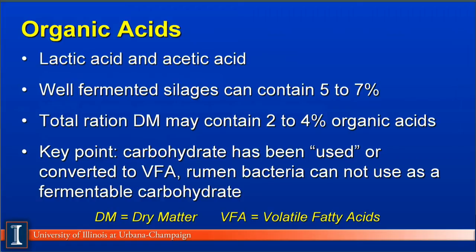Let's now break down the NFC fractions. The first one we'll discuss is organic acids. Organic acids are produced during the fermentation of silages primarily. The major acids would be lactic acid and acetic acid, and in a well-fermented silage can contain 5 to 7% organic acid. If we mix half forages and half concentrates, the total ration dry matter may contain 2 to 4% organic acids. The key point is these carbohydrates have been fermented by the bacteria in the silo and converted over to VFAs, which the cow can absorb, but the rumen bacteria cannot use it twice.